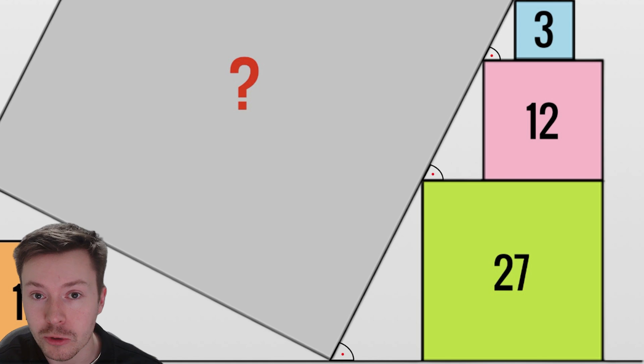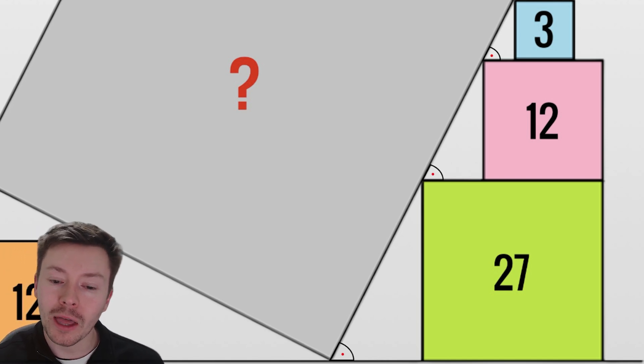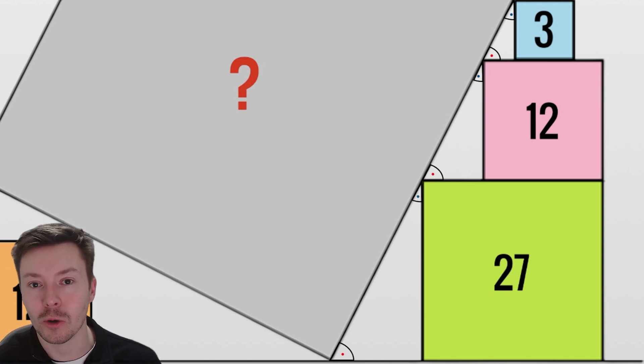You can prove that algebraically. If we call them theta, we know they've all got right angles at the bottom right because of the squares. That means the top angles would be 90 minus theta, and if you do 180 take away 90 take away 90 minus theta, you get theta again, which means that top angle would also be the same.